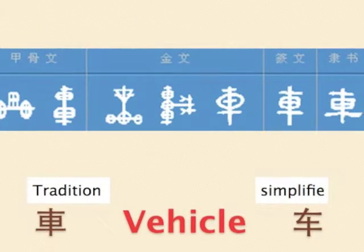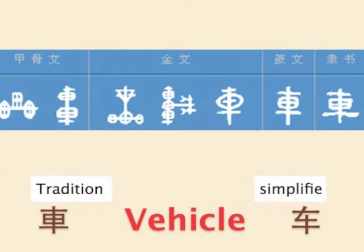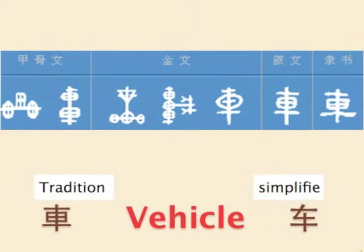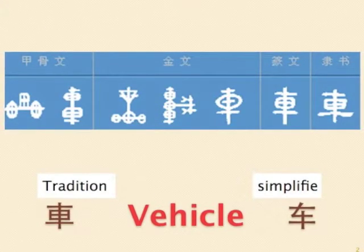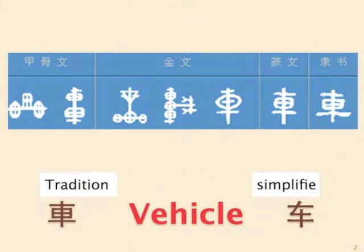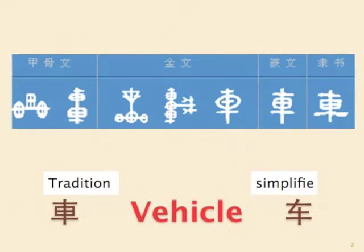First word: vehicle. The ancient word looked just like the side view of a vehicle with wheels on both sides. After a while, it evolved to be more like the top view of a vehicle — the wheels became two strokes while the body stayed the same. The simplified form further simplified the body part.